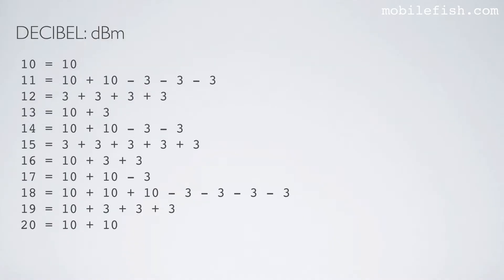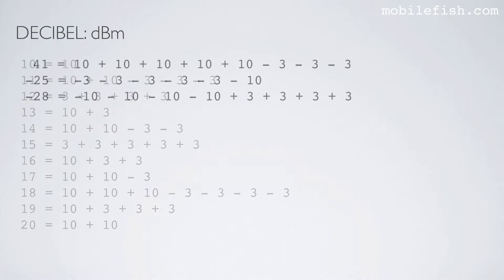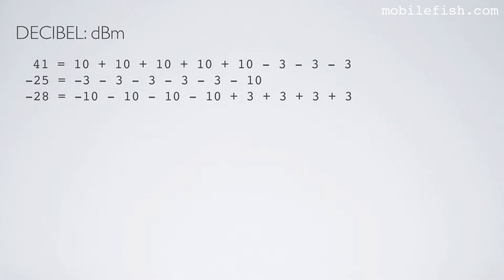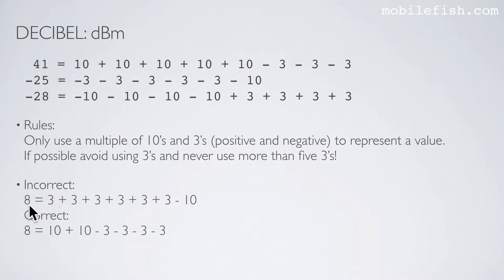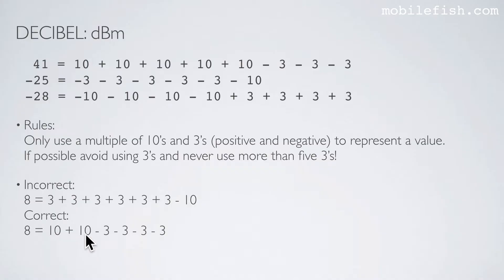Here are more examples, including some difficult ones. The rules are: only use multiples of tens and threes, you can use positive and negative values, avoid using threes if possible, and never use more than 5 threes — because of the rounding explained earlier. For example, the value 8 should not be written as 3 plus 3 plus 3 plus 3 plus 3 plus 3 minus 10, because that uses 6 threes. The correct way is 10 plus 10 minus 12, which uses only 4 threes.